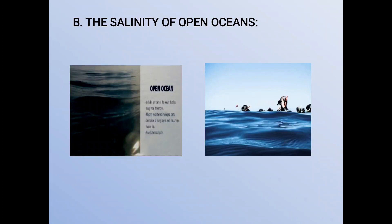Third, the polar oceans. The salinity in the polar parts of the oceans is less than 34 percent. The salinity is less due to the low temperature of the air. Second, the supply of fresh water is more — in spring and summer, the polar oceans receive a large supply of fresh water from the melting snow.